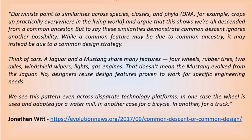So Darwinists point to similarities across species, classes, and phyla — DNA for example — and argue that it shows we're all descended from a common ancestor. But to say these similarities demonstrate common descent ignores another possibility: while a common feature may be due to common ancestry, it may instead be due to a common design strategy. Think of cars. A Jaguar and a Mustang share many features: four wheels, rubber tires, two axles, windshield wipers, lights, and gas engines. That does not mean that the Mustang evolved from the Jaguar. Designers reuse design features proven to work for specific engineering needs.